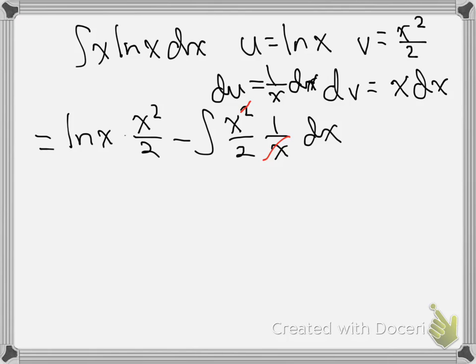And if we go ahead and rewrite this, I'm going to write the x squared over 2 out front, ln of x, minus, I'm going to pull the constant out, 1 half, times the anti-derivative of x dx.